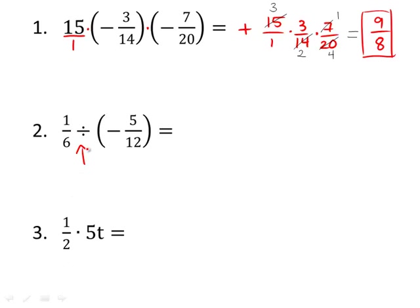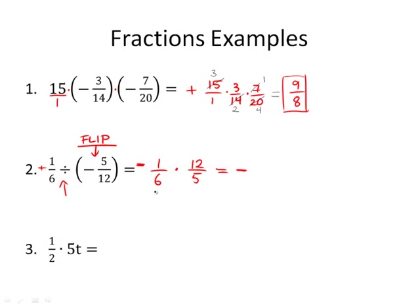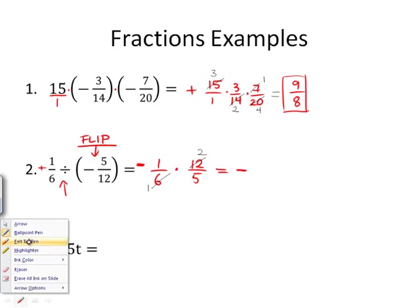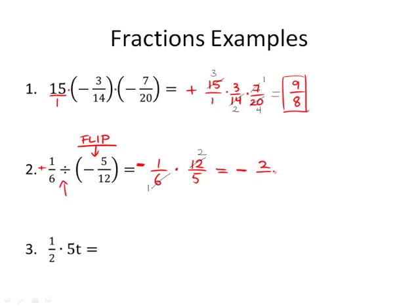Next up, we've got a division problem. We've got 1 sixth, and remember when you're dividing, you need to flip the second fraction. We can also look at the sign here — positive divided by negative is overall going to be a negative, and then we're done with the sign. So we've got 1 sixth times the reciprocal, which is 12 over 5. It's still a negative. So 6 and 12 both divide by 6, leaving us with 1 and 2. Therefore, we've got 1 times 2 and 1 times 5.